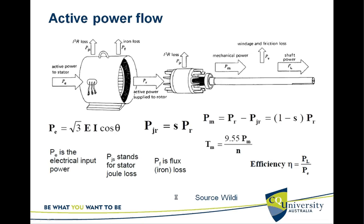Now, how does the power flow take place? Active power is supplied through the stator windings into the stator, and then through the air gap — through the interaction of the rotor and stator magnetic fields — active power is supplied to the rotor.